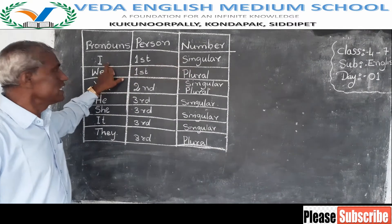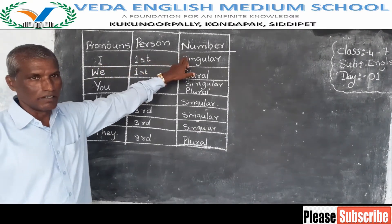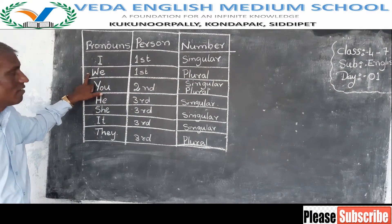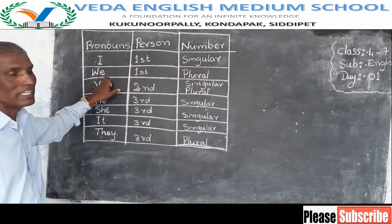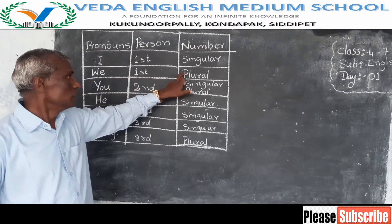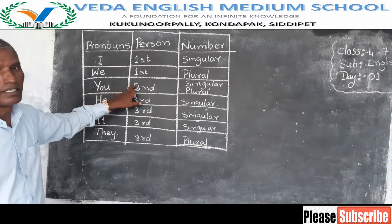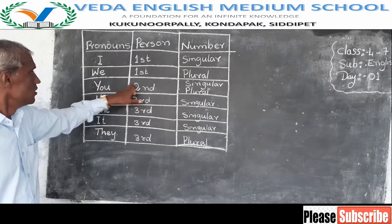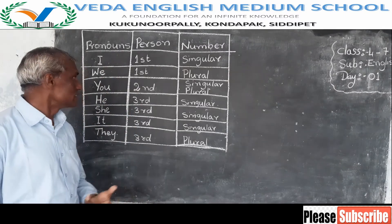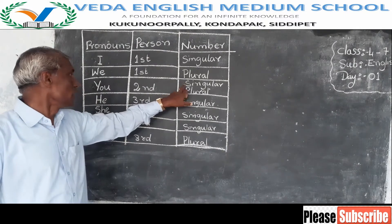That's why we call I first person singular. Whereas we is first person, but we means more than one, so it is plural. You is the listener, the second person. We use you for one person or more than one person. That's why you is singular and plural.